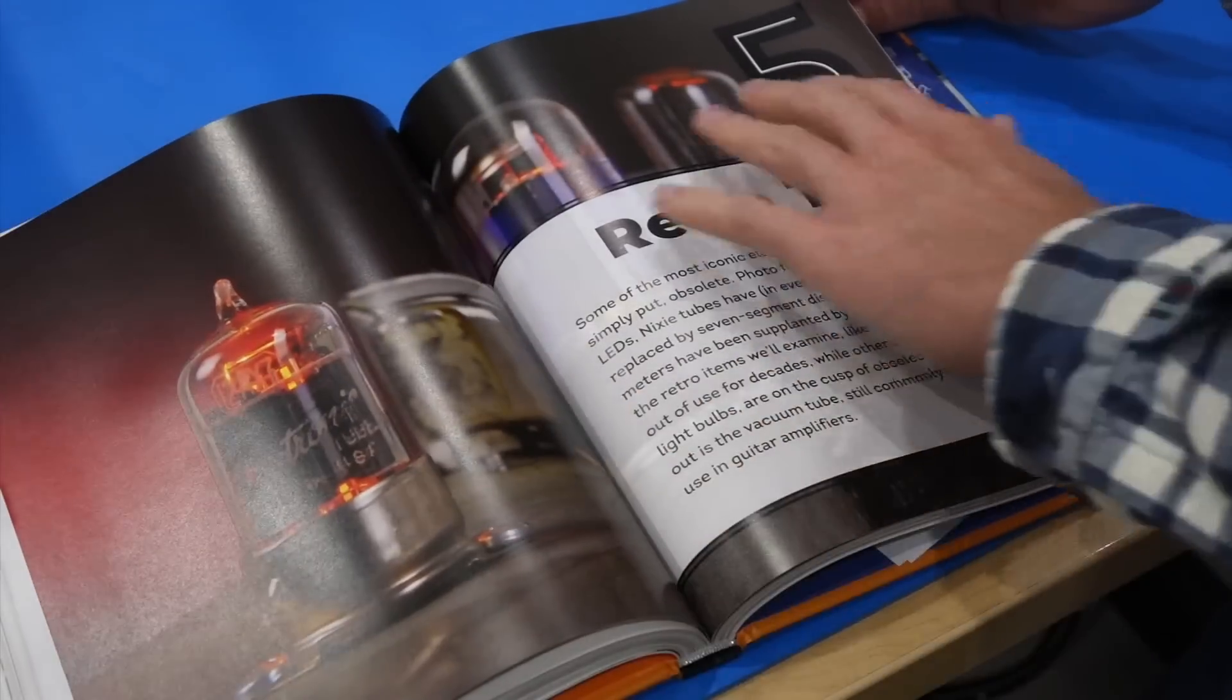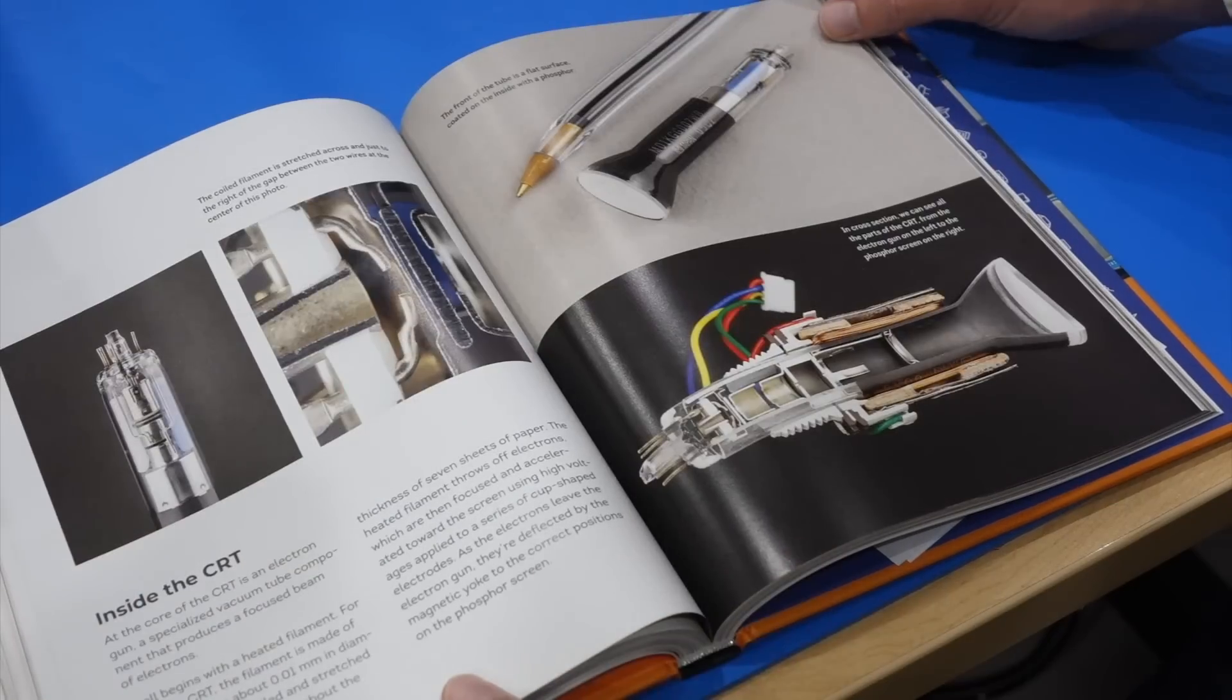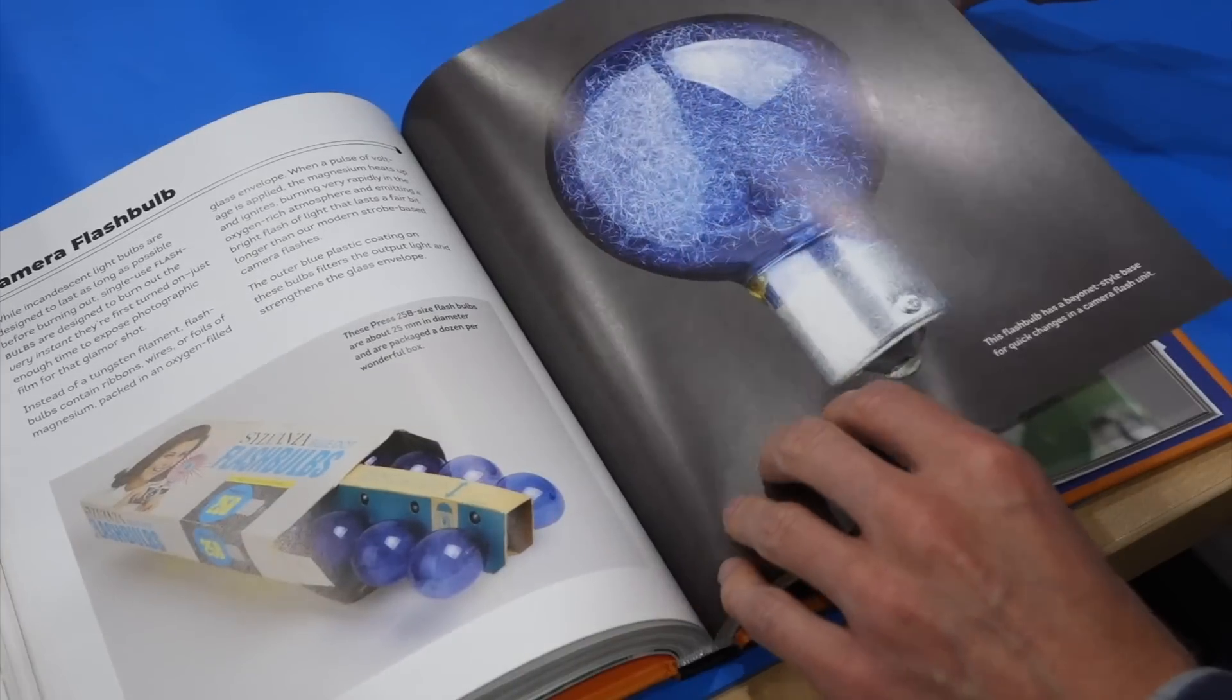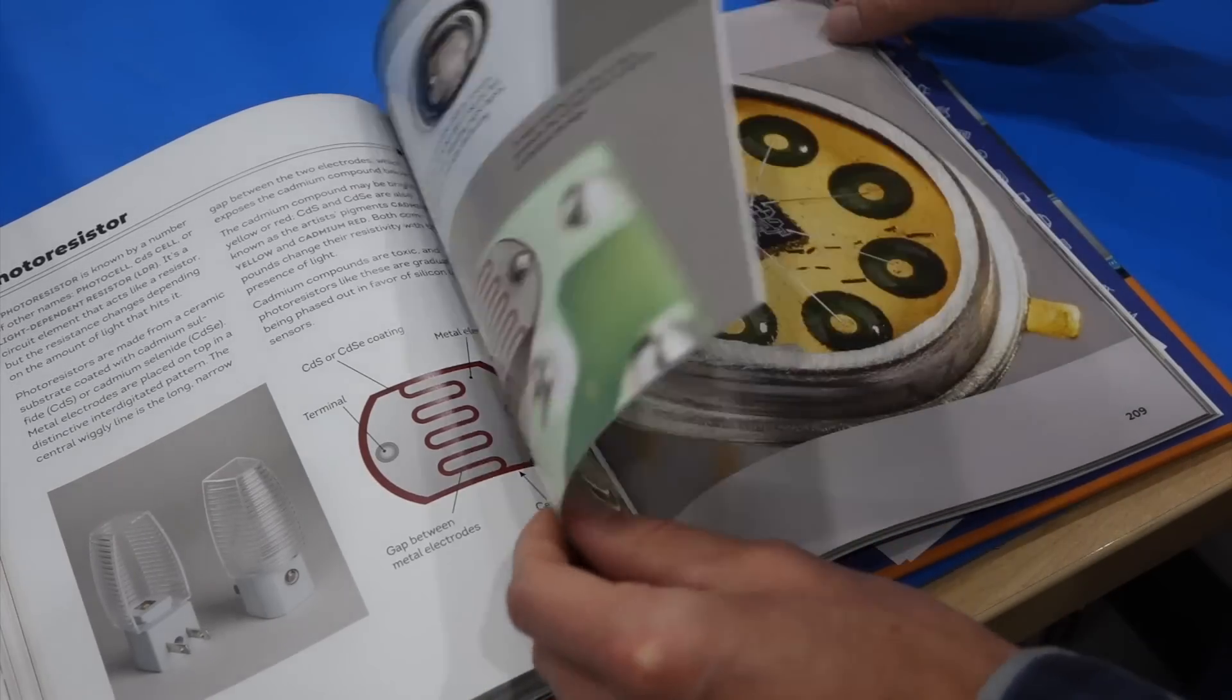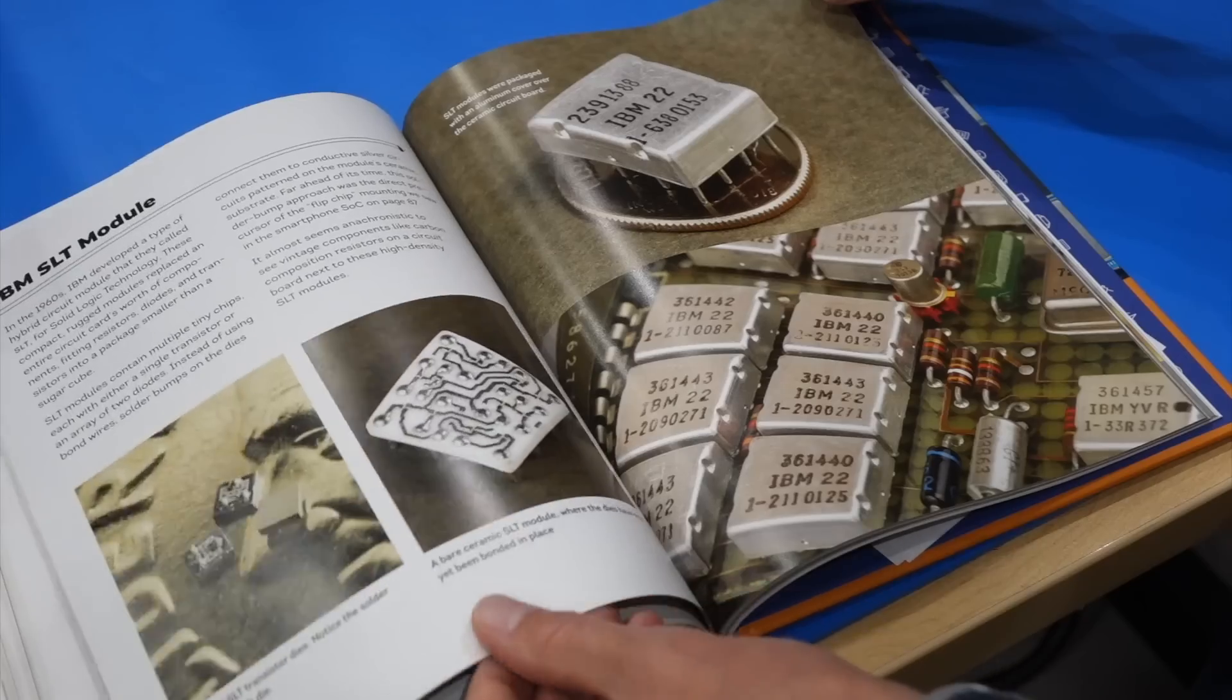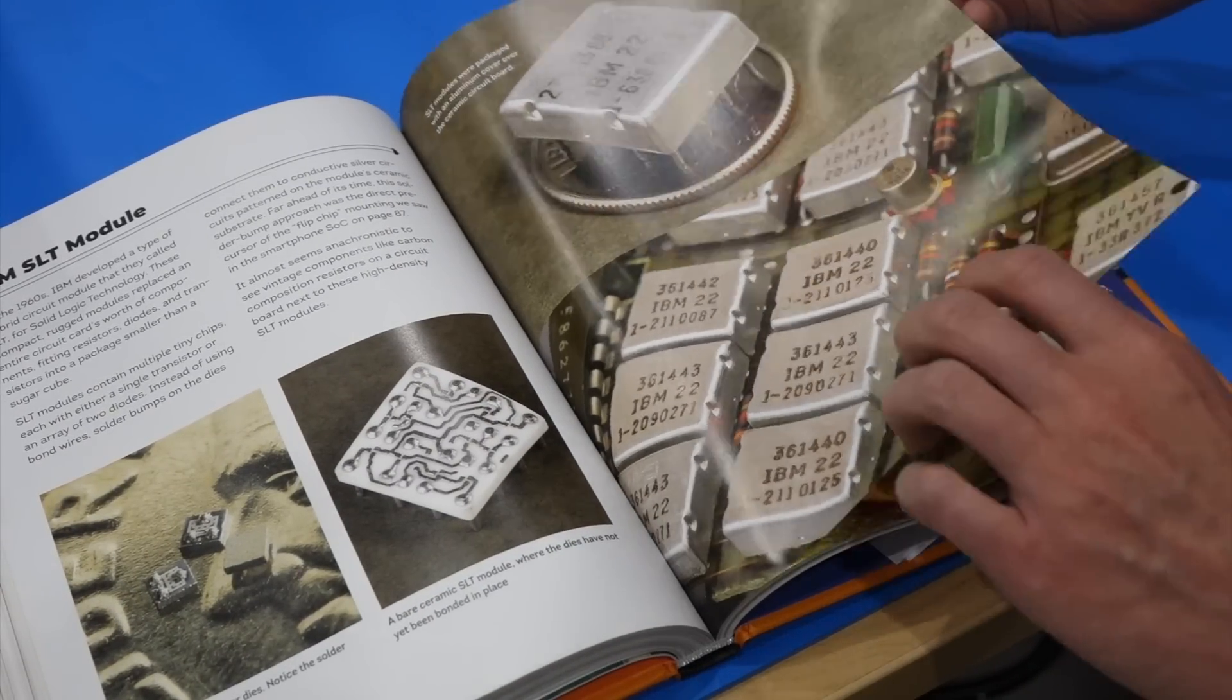And then of course we have a whole section here on Retrotech. Yes! Vacuum tube. That's got to be one of my favorites. Cut through a CRIT, camera flashbulb, CD-SL, some older integrated circuits. Oh 702, the Alternate Reality, the IBM SLTs.